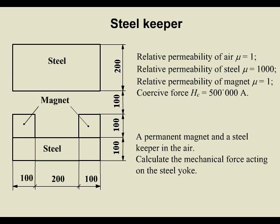Steel Keeper. Relative permeability of air: 1. Relative permeability of steel: 1000. Relative permeability of magnet: 1. Coercive force: 500,000 amperes per meter.